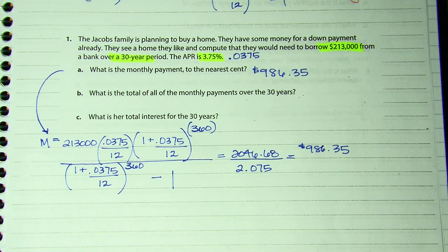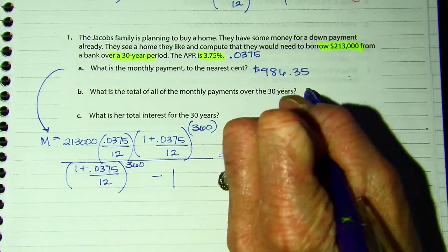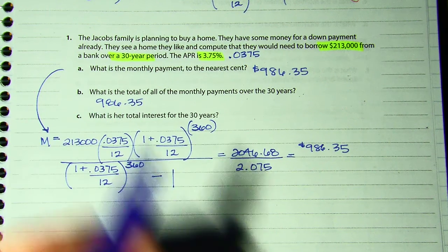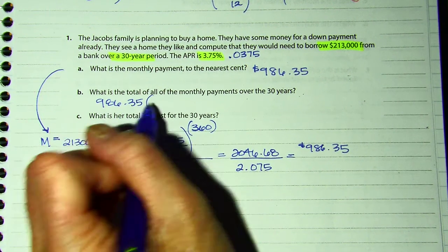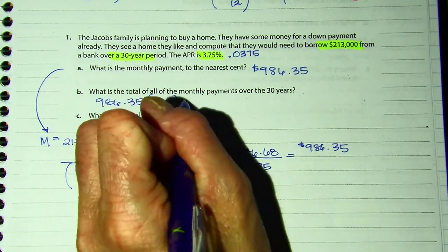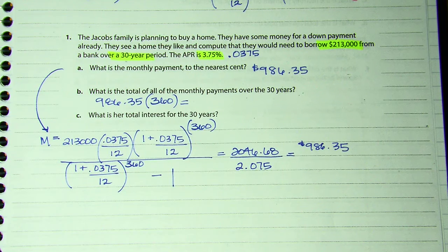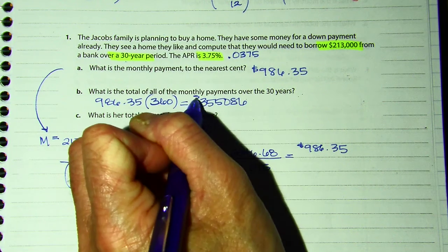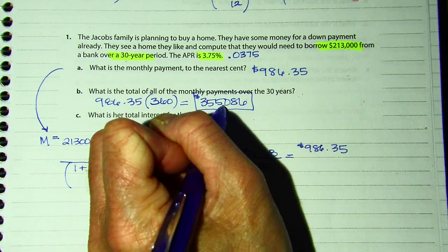And then part B says: what is the total of all monthly payments over the 30 years? So if this is their monthly payment, $986.35, that's what they're going to pay per month. But they have to do that for a total of 360 months, because there are 12 months times 30 years. So that total: $986.35 times 360 — they will pay $355,086.